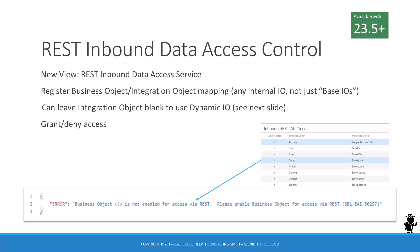The ability to control REST access to Siebel business objects individually is a much-welcome change. It's facilitated by a new view in the Administration Web Service screen. This view allows administrators to grant or deny access to each individual business object by simply checking or unchecking the grant access flag. With 23.5 or higher, any business object one wants to access via the Inbound REST API must be listed in this view and have the grant access flag checked.